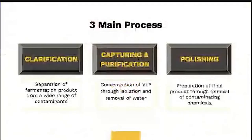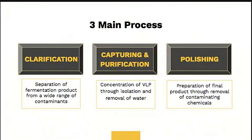Downstream processing is the recovery and purification process of fermentation products, which is essential for the commercialization process. The process starts by clarifying, followed by capturing and purification, and finally polishing. The DSP process designed should cover the best balance between purity, cost, and processes to obtain the wanted products.